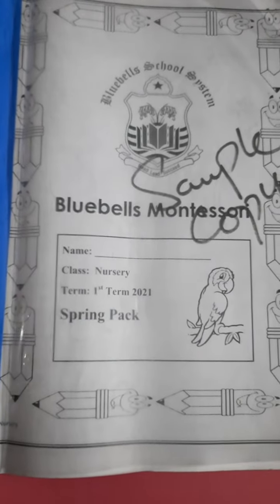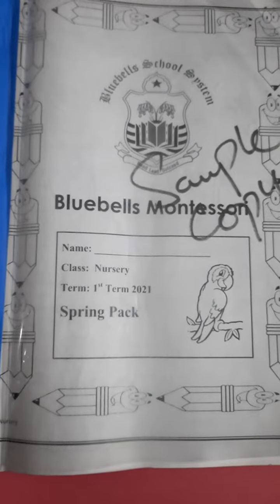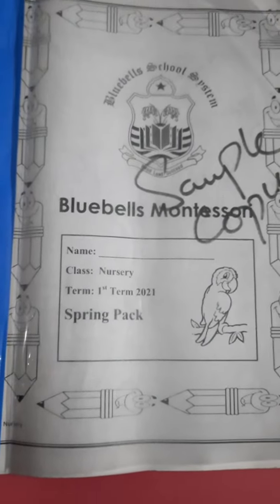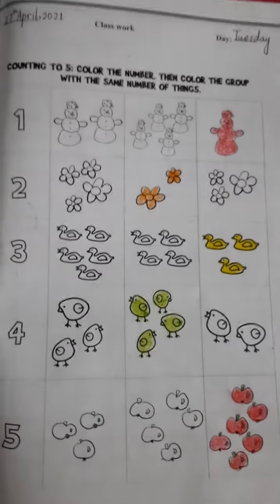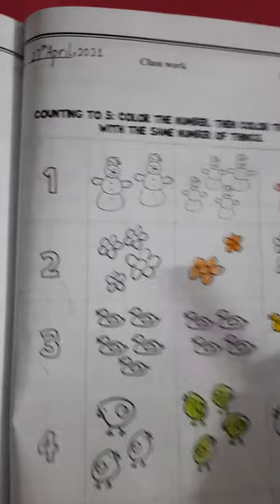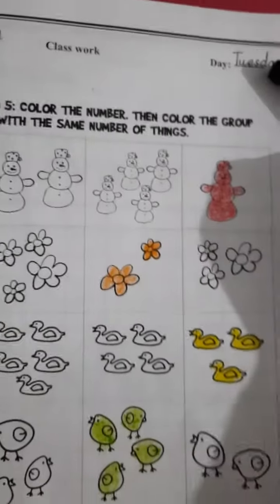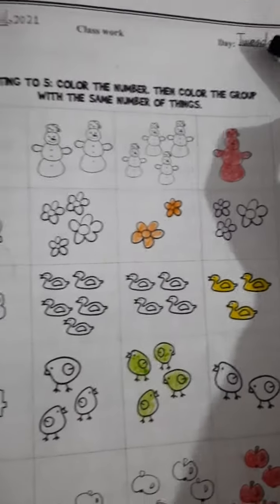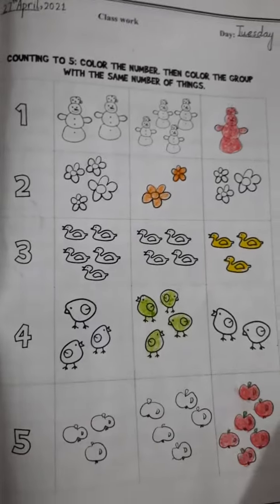Assalamualaikum students, this is class nursery. Today our subject is math. Open your spring pack page number 79 and mention the date and day on the top of the page. What is the date today? 27th April 2021. And what is day today? Tuesday. Today is Tuesday. This is your classwork. First of all recite tasmiyah before writing.